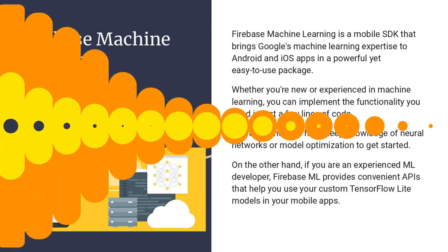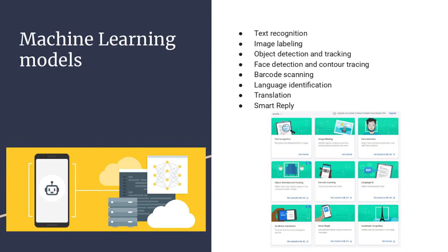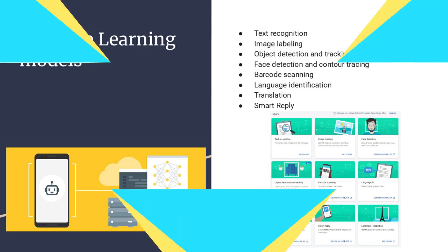Firebase ML Kit also provides a convenient API to host ML models on Firebase, accessible via REST API. The major advantages are that you can train and deploy your custom model, or use ML Kit's pre-built models. It is production-ready and easy to use through APIs. The available machine learning models cover various categories ranging from text recognition, image labeling, and object detection. Most image detection models give high accuracy, so you don't need to waste time pre-training from scratch — simply use the available models. It also includes models for NLP.